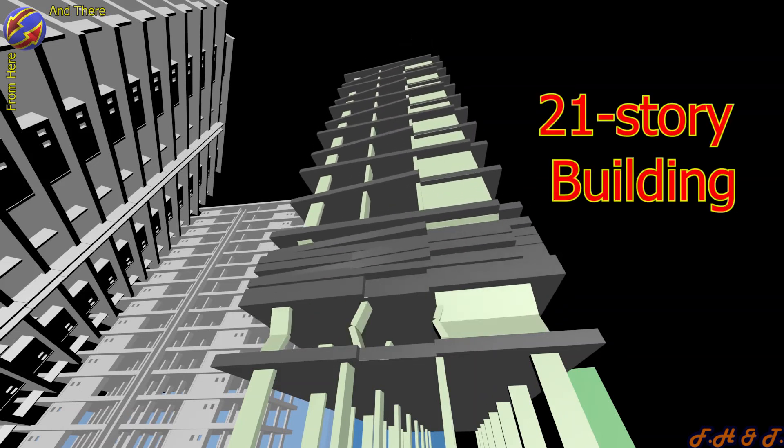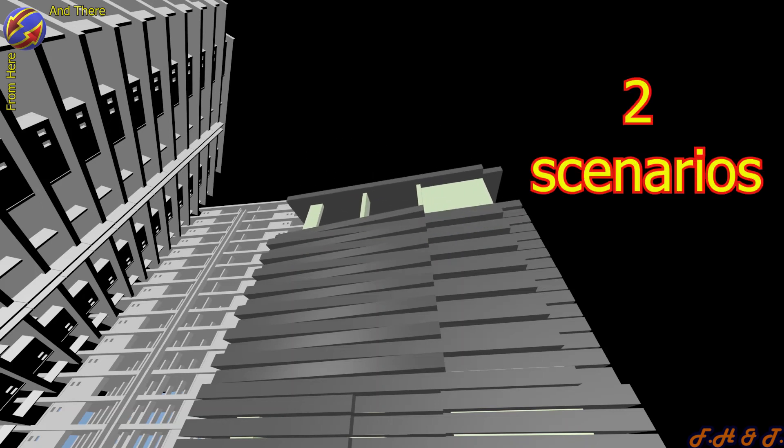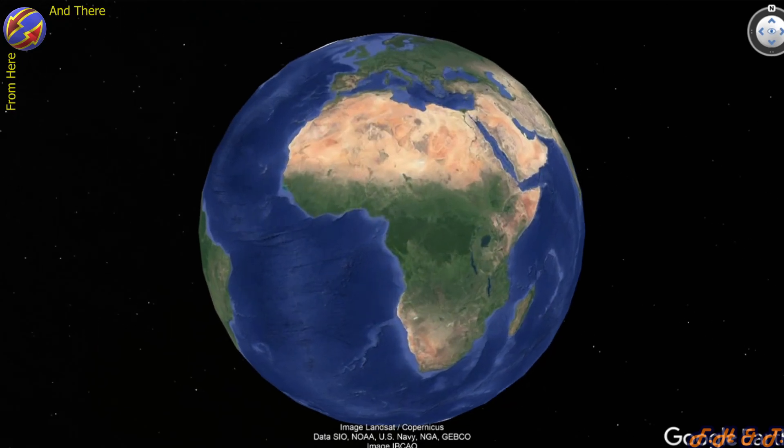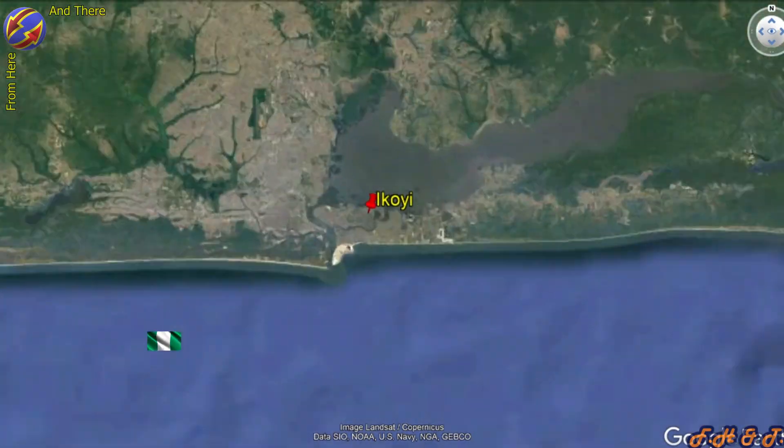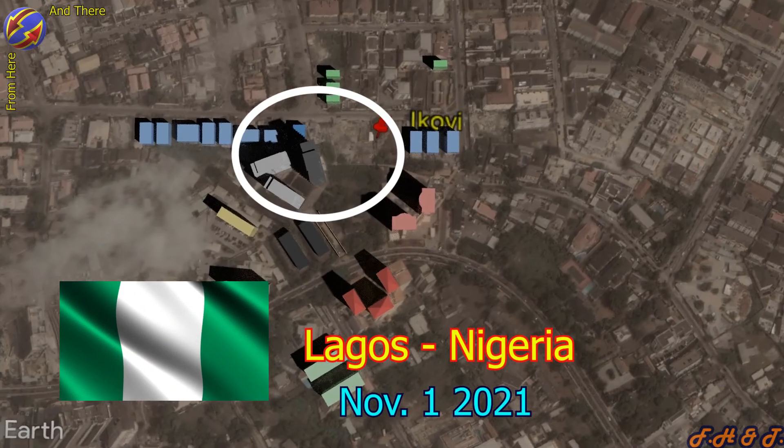21-story building suddenly collapsed in Nigeria, two scenarios. Lagos, Nigeria. November 1, 2021.